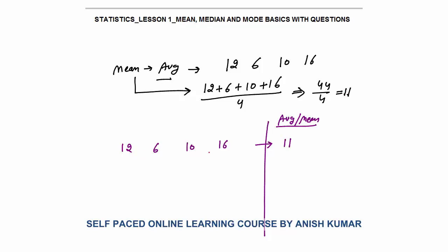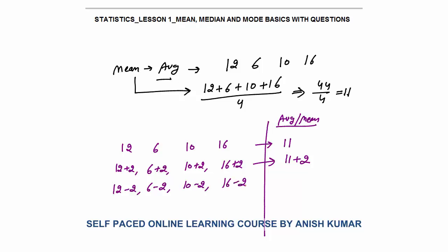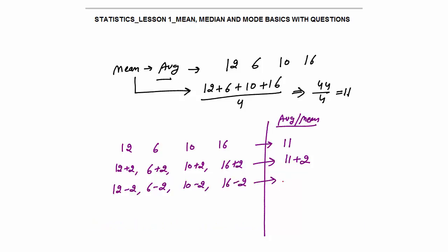Now, a very important concept. The numbers 12, 6, 10 and 16 have a mean of 11. If you add the same number to each observation — say I add 2 to each number — the average will also increase by 2. So the new average would be 11 plus 2. Same way, if you subtract the same number from each observation, the average will also decrease by that amount — in this case, by 2.